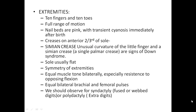Extremities. There should be 10 fingers and 10 toes with full range of motion. Nail beds are pink with transient cyanosis immediately after birth. Unusual curvature of the middle finger and a single palmar crease are signs of Down syndrome. Assessment should confirm symmetry of extremities, equal muscle tone bilaterally with resistance to opposing flexion, and equal bilateral brachial and femoral pulses. Note any syndactyly (fused digits) or polydactyly (extra digits).